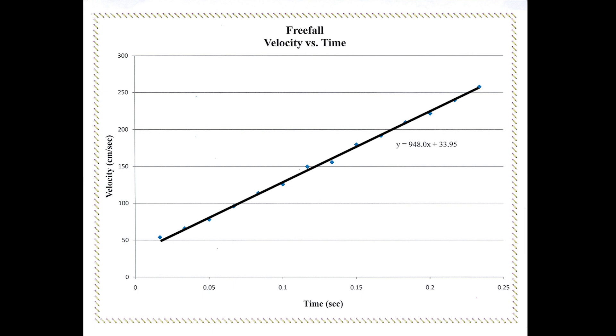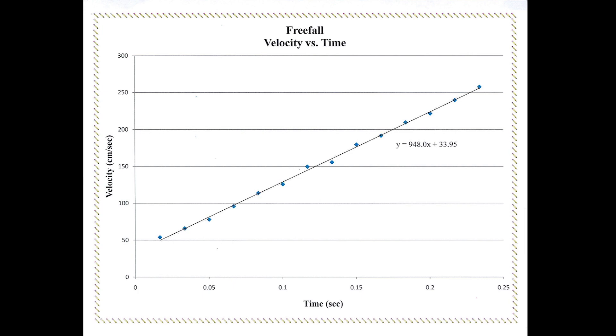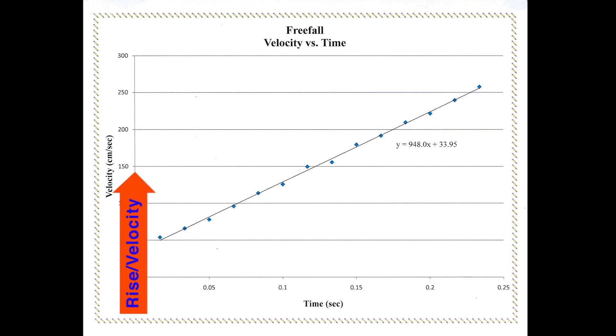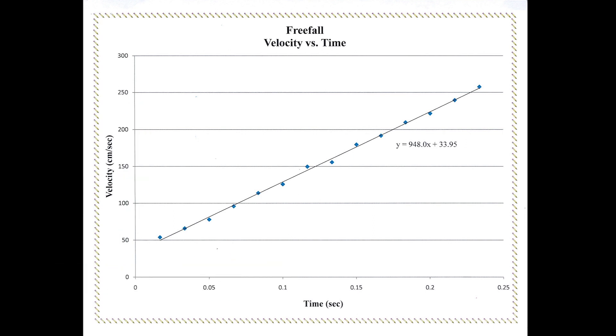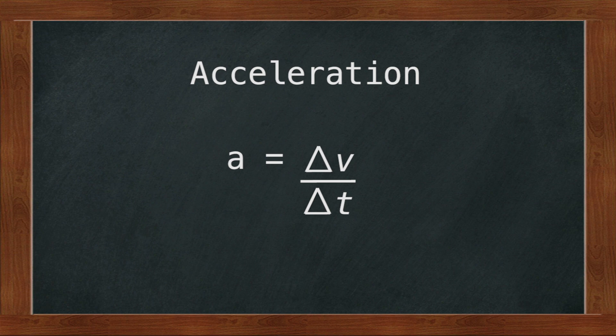Now we are ready to calculate the acceleration due to gravity. We will take the slope of our trend line. Most of you probably know that a slope represents the rise over the run. The rise is the y-axis, upon which we have plotted velocity. The run is the x-axis, where we have plotted the elapsed time. This means that our slope is a representation of change in velocity over change in time, which is the definition of acceleration. Acceleration equals delta v over delta t.